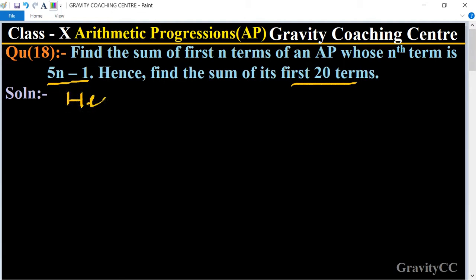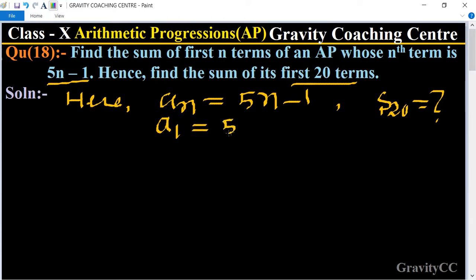Here given, the nth term an equals 5n minus 1, and find S20. First we put the value of n equal to 1, so it will become 5 into 1 minus 1 equal to 4.